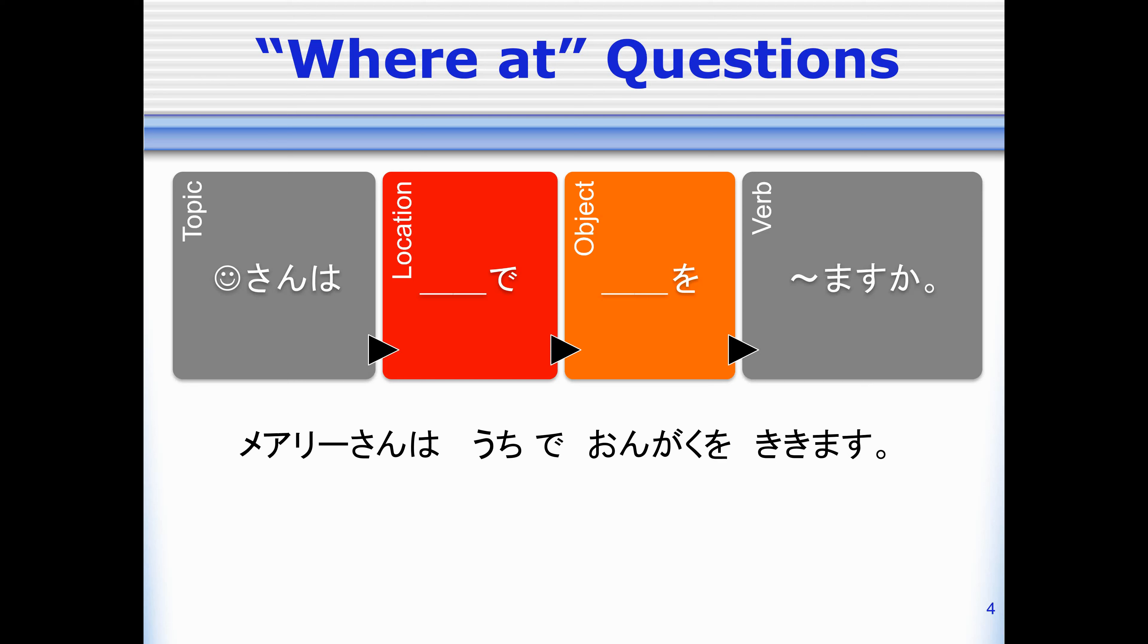Now if I want to ask where Mary-san listens to music, I want to use again my question word. What question word do we have that means where? That's right, we have doko. So Mary-san wa doko de something wo, and then the verb. So Mary-san wa doko de ongaku wo kikimasu ka, is our particle at the end. We can answer by replacing the doko with the place. So Mary-san wa uchi de ongaku wo kikimasu.